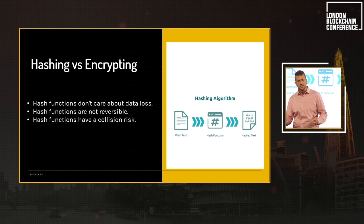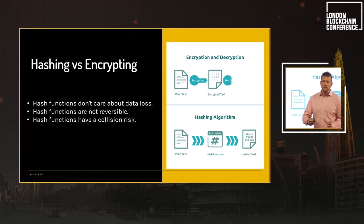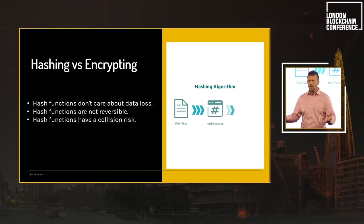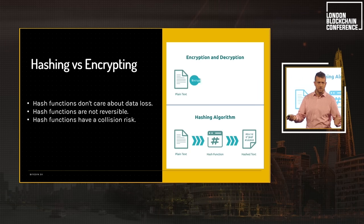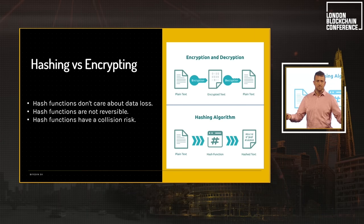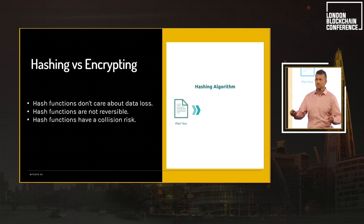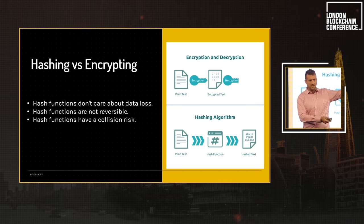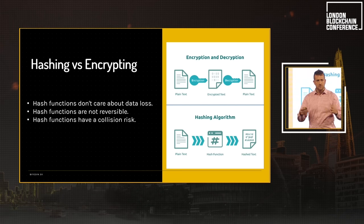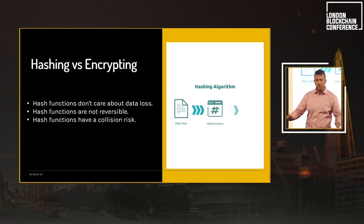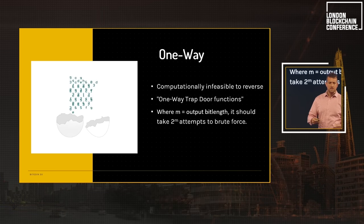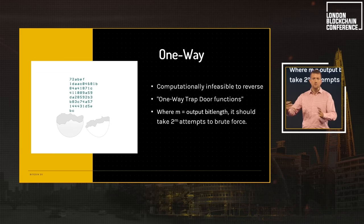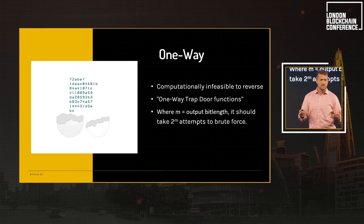There's a difference between hashing and encryption. Hash functions don't care about data loss — they're a compression function and they're not reversible. Whereas with encryption, you need to decrypt the data to understand the message contents. Hash functions are known as one-way trapdoor functions: given a 32-byte or 256-bit output, it is computationally infeasible to determine what input generated it.